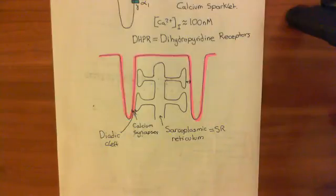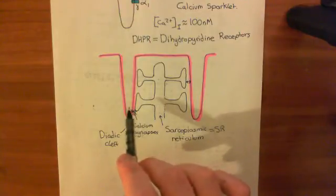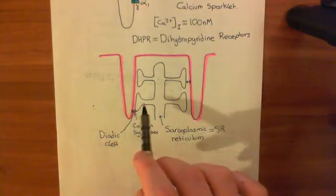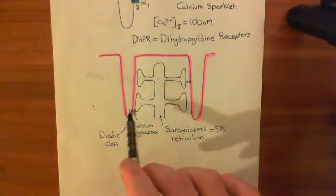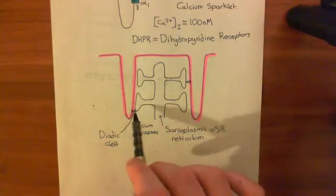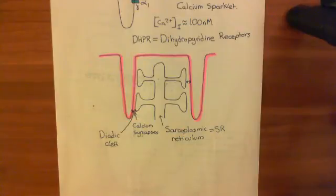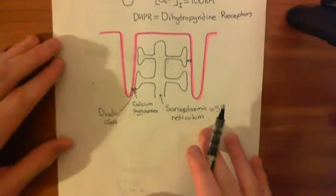Welcome to this next video in which we are discussing cardiac muscle contraction. So far we've seen that when an action potential arrives at the plasma membrane, it causes these L-type voltage-gated calcium channels to open. These allow calcium to move in from the extracellular space into the cytoplasm, going into the dyadic clefts. That calcium signal, known as a calcium sparklet, is going to trigger release of calcium from the sarcoplasmic reticulum.